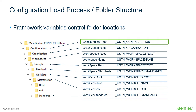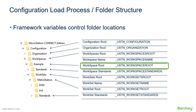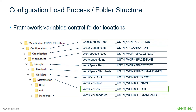Let's look at a few of these variables. We'll start with ustn_configuration, which is the base variable that points to the configuration folder. Next is the workspaces_root variable, which points to the workspaces folder. We then add the workspace name derived from the interface selection. The workspace_standards folder sits underneath that. The worksets_root contains all worksets in the default location, and there is a corresponding standards folder in the workset location.